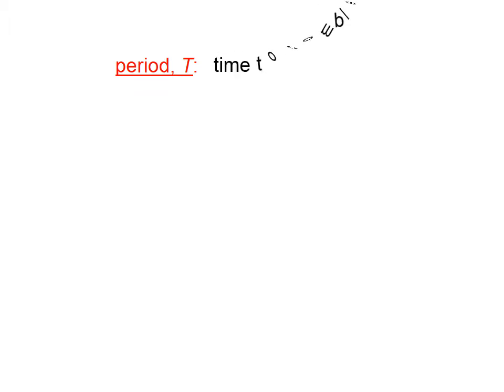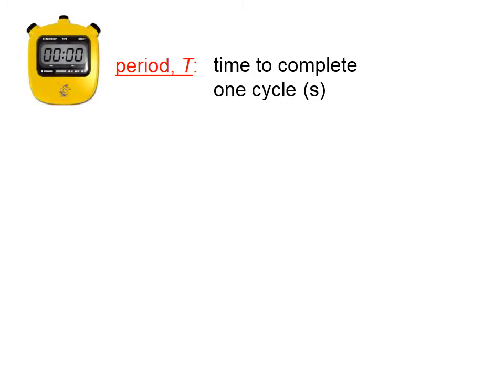Let's define what we mean by the period of motion. The period, symbolized by capital T, is the time to complete one cycle. In the SI system, typically the best unit to use for period is the second.